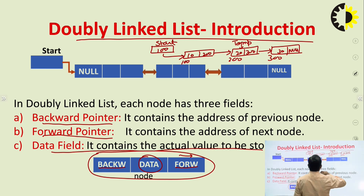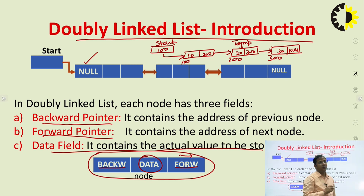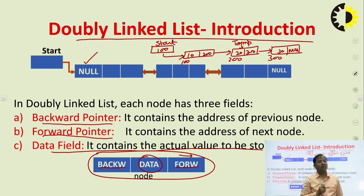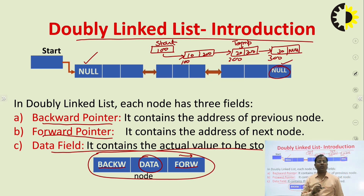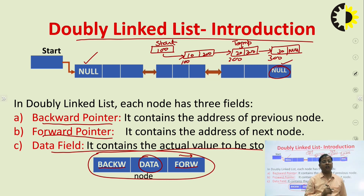If a node is the first node, then its backward pointer contains null, because the first node has no previous node. And in the case of the last node, the forward pointer or forward address field contains null, because after the last node there can be no node as a next node.